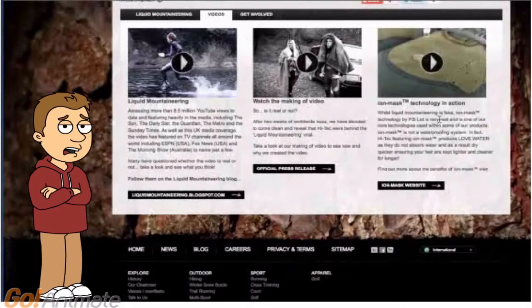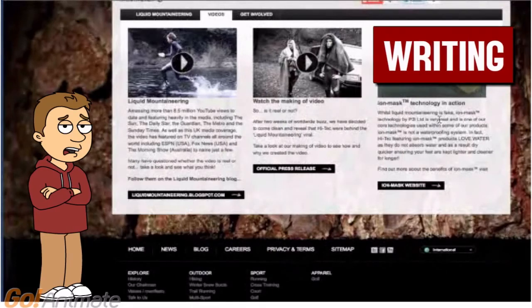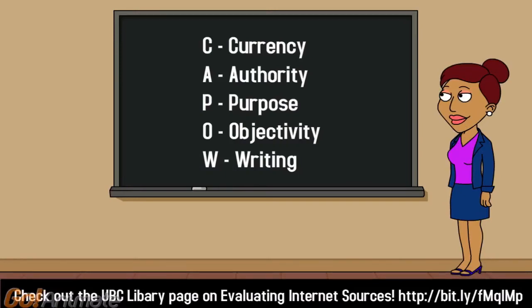The last thing you need to check is writing style, and I think we can both agree there was precious little of that on that blog. So there you have it: currency, authority, purpose, objectivity, and writing style. Kapow!